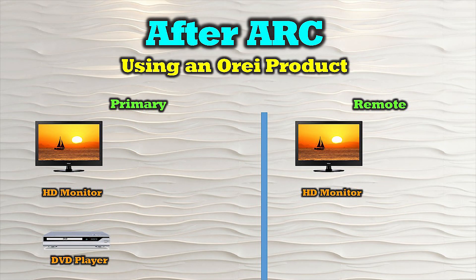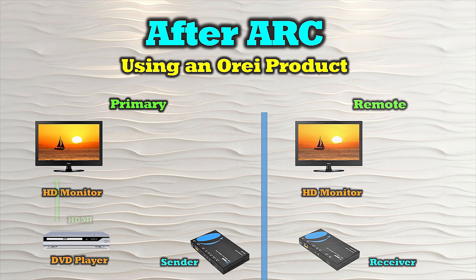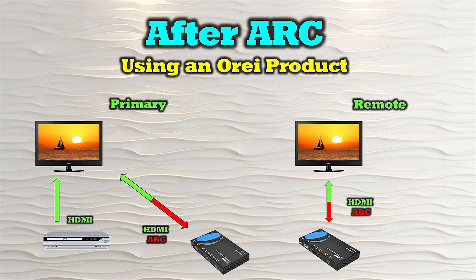If you're using one of the O-Ray products that supports ARC audio, you can take advantage of all the benefits this standard provides. For example, if you have a DVD player and want to share a movie with a remote location in your home, you'd use an O-Ray HDMI extender kit. This kit includes both a sender and a receiver module. You'd connect an HDMI cable between the DVD player and the local display at the primary site, then a second HDMI cable from the HDMI ARC output on that display to the sender module. At the remote location, you'd connect an HDMI cable between the receiver module and the display, and finally make a network connection between the modules to start enjoying your content.